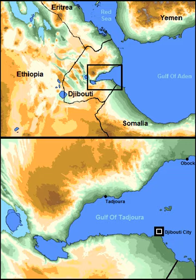At the entrance of the gulf is the group of small islands of Musha and Mascali. At the bottom of the gulf, separated only by a narrow neck of land, lie Gubat-el-Karab and Asal. Geologically, the sea formerly covered the gulf to Lake Asal, which is now about 155 metres below sea level.